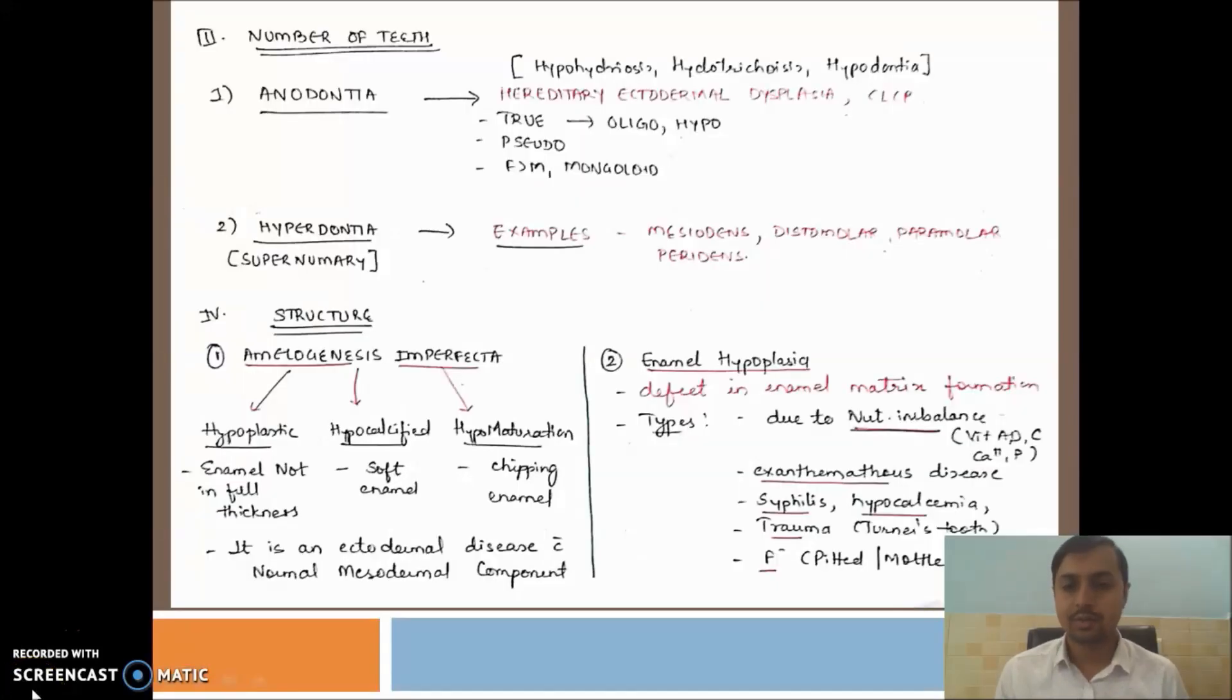Let's now focus on the structural disturbances in the development of teeth. As we know, the two important structures of the teeth are enamel and dentin. Let's focus first on the enamel. How enamel formation takes place? It takes place in two phases: matrix formation and mineralization of the matrix. Disturbance can be at these two levels.